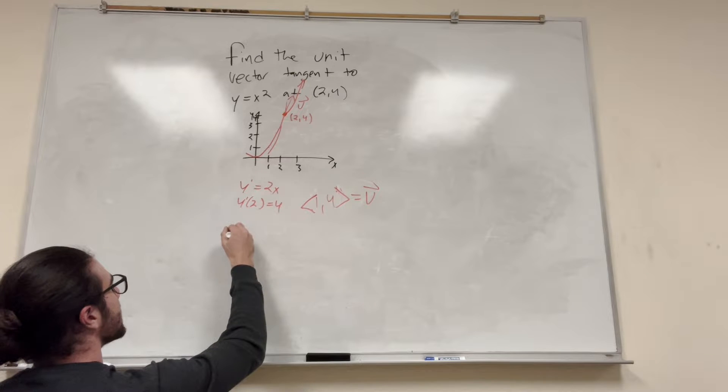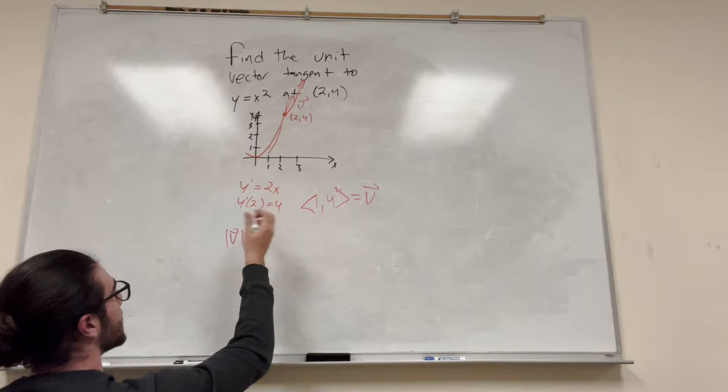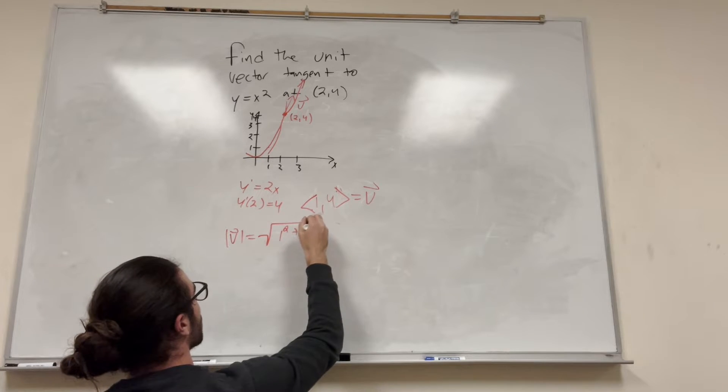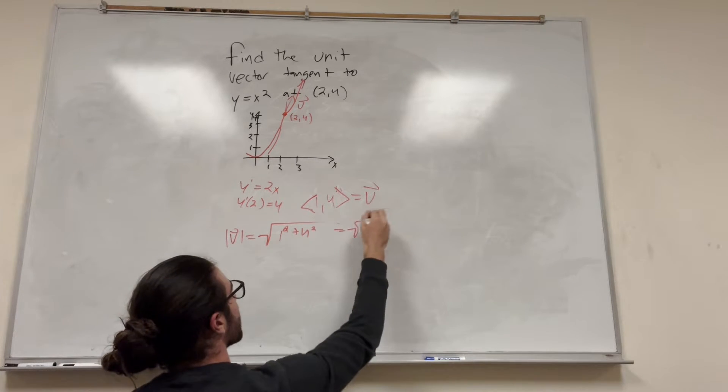So the magnitude of V is basically the distance of this. That's going to be equal to 1 squared plus 4 squared, which is equal to the square root of 17.